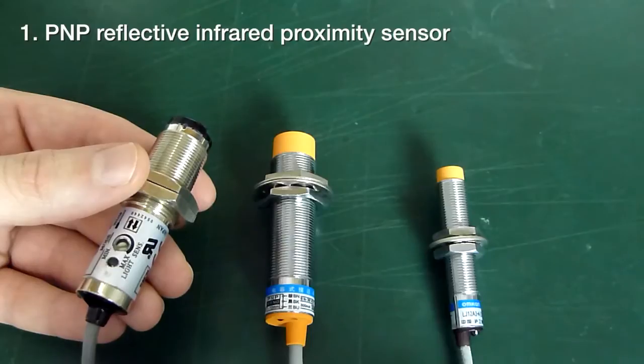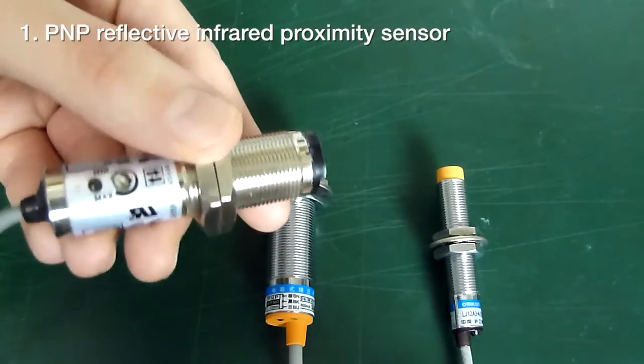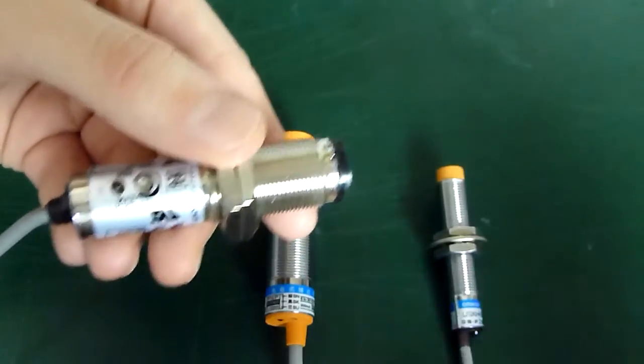This first sensor is a reflective infrared sensor. It will be triggered if any object is placed within 40 cm of its beam.